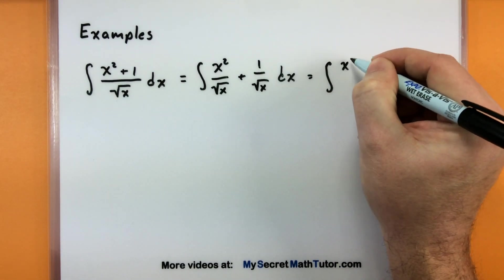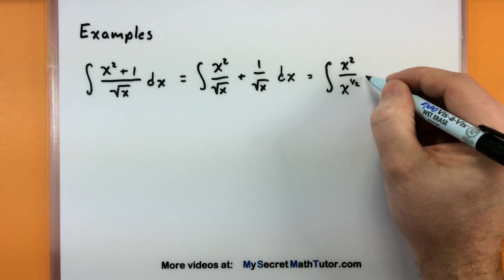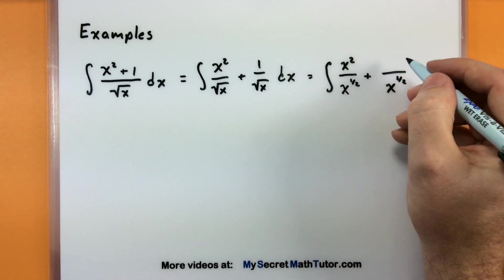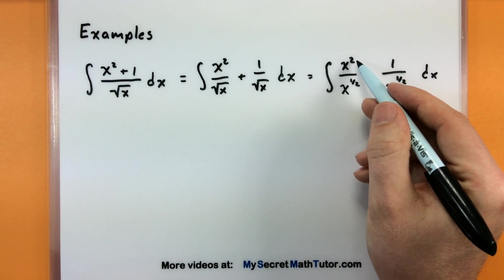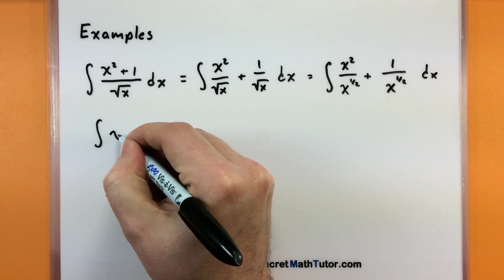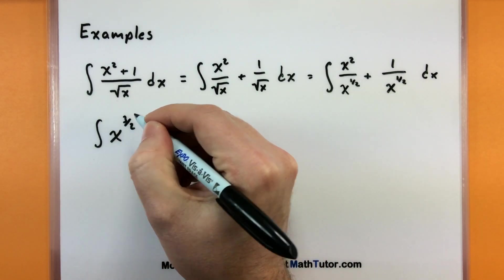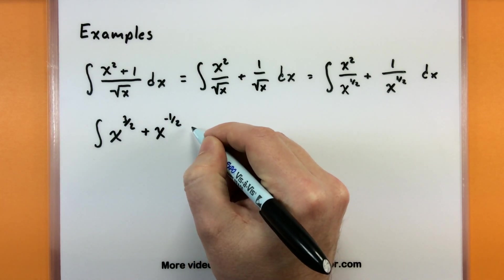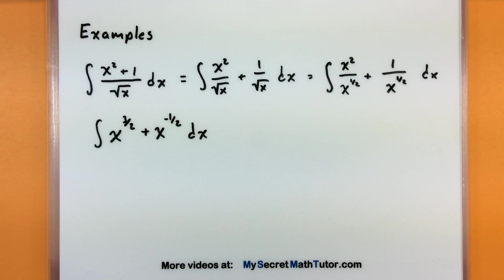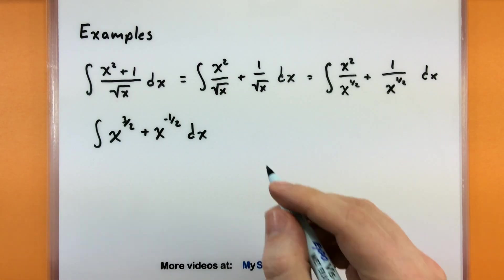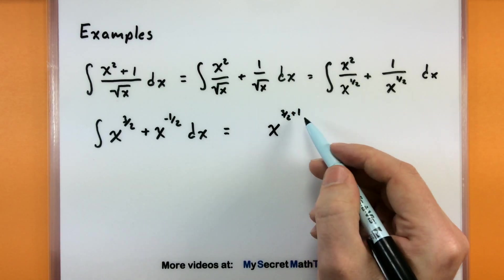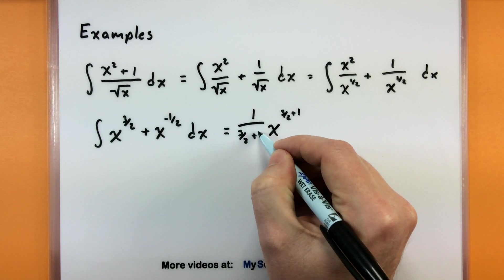Instead of a square root I would write this as x to the one-half. I want to reduce the powers: for the first one I subtract one-half from two, giving three-halves. Since there are no x's in the top of the second term I consider it a negative exponent: plus x to the negative one-half. Notice I have not taken the anti-derivative yet — I've just been manipulating the expression so I can use my rules. Now I can apply the rule of adding one to the power and dividing by the new power.